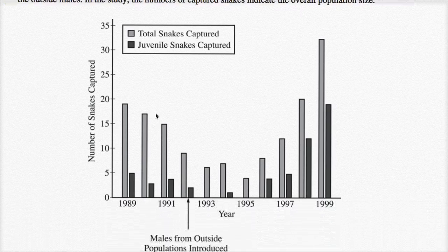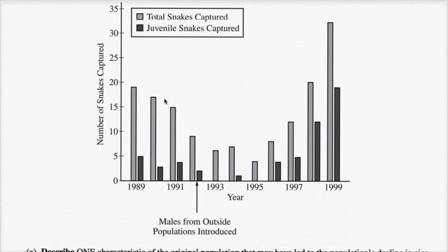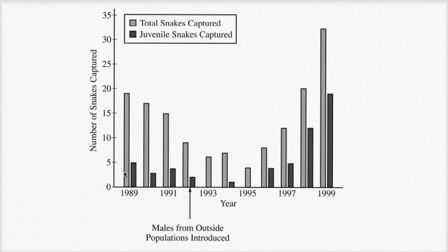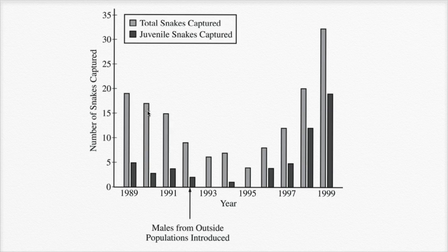Looking at the data from the study: in 1989, they captured a bunch of snakes — the total snakes captured — but a small fraction of them were juveniles, about five of the 19 snakes were juvenile. We see that the total population seems to be declining. Then they introduce the males from the outside, and after a couple of years the population seems to increase again.